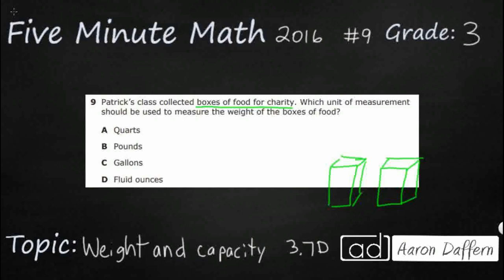And then we need to find the unit of measurement that should be used to measure the weight. So that's going to be our big question right there. How do we measure weight? And only one of these is going to be helpful for us when we measure weight. But look at our answer choices: Quarts, pounds, gallons, and fluid ounces.